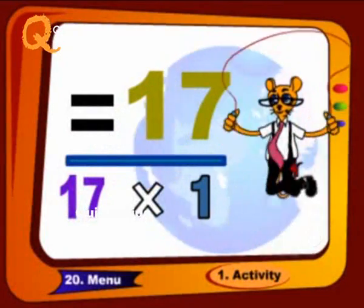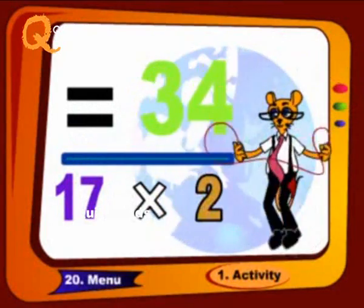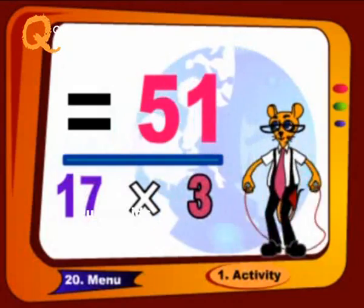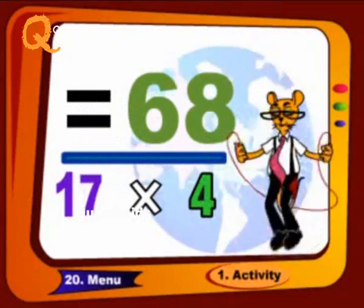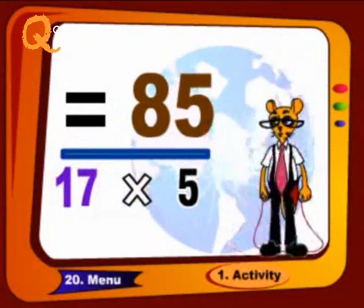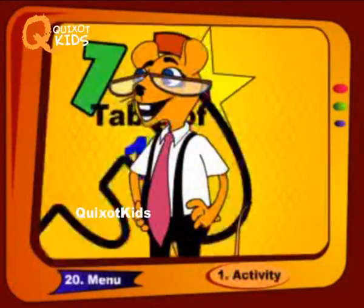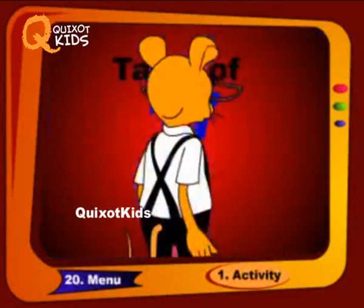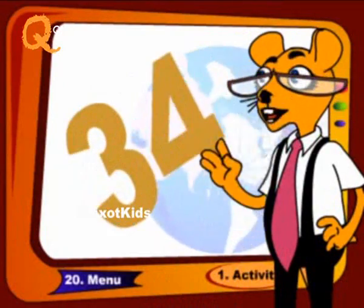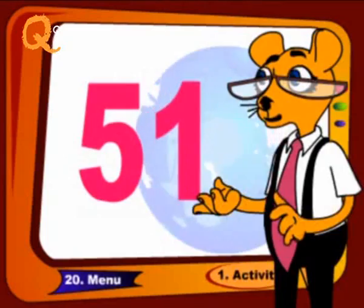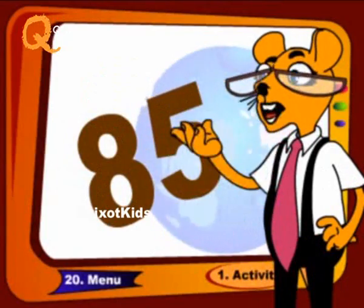Seventeen 1s are 17, seventeen 2s are 34, seventeen 3s are 51, seventeen 4s are 68, seventeen 5s are 85. Let us revise it again like this: 17, 34, 51, 68 and 85.